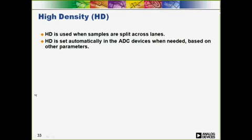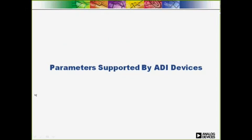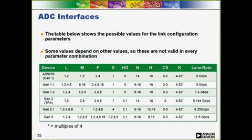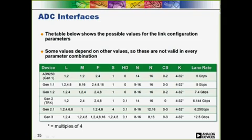HD indicates that samples are split across more than one lane and is typically set automatically. This table shows the different parameter values supported by our ADCs with the JESD204B interface. Not all permutations are supported on any given device; the datasheet will list all valid modes. Beyond the AD9250, there are a number of ADC development projects in the works, many scheduled to release in the next few months. You can contact your local ADI support team for more information on these devices as it becomes available.